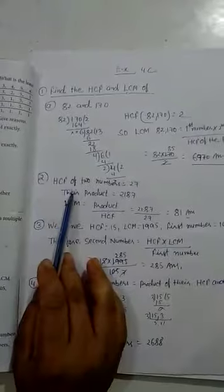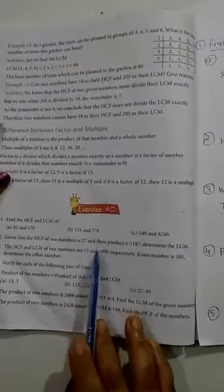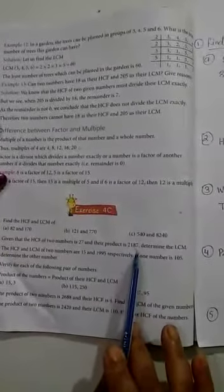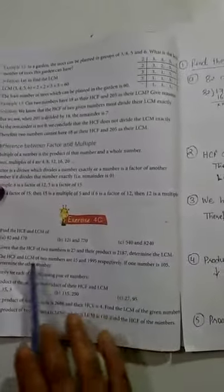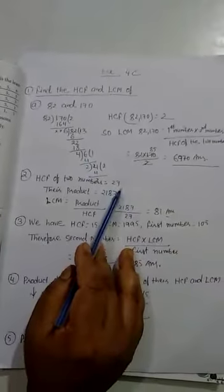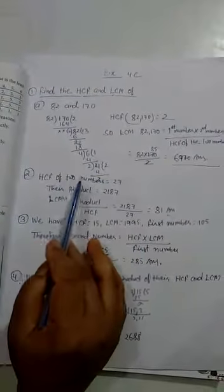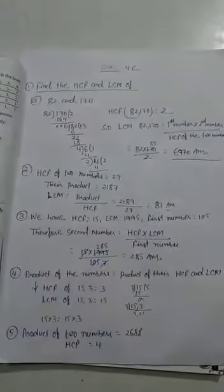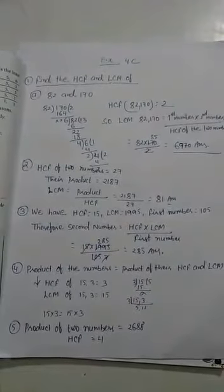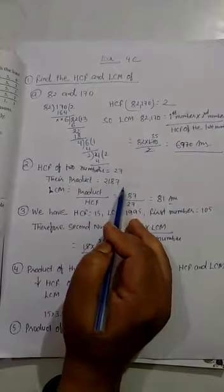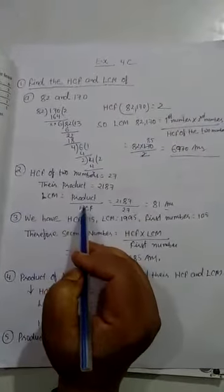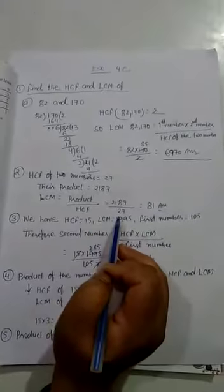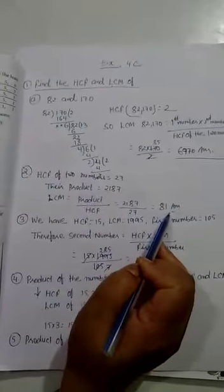Second question: given the HCF of 2 numbers is 27 and their product is 2187, determine the LCM. Here we have HCF of 2 numbers equal to 27. And their product is 2187. We have to find LCM. LCM is equal to product divided by HCF. We will divide and get answer 81.